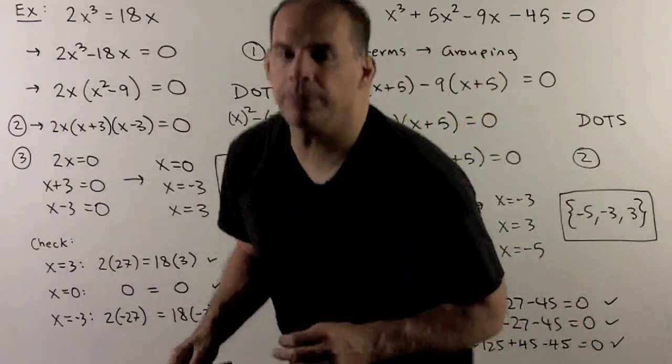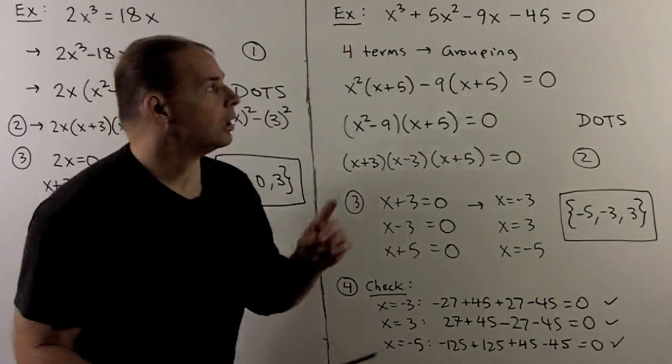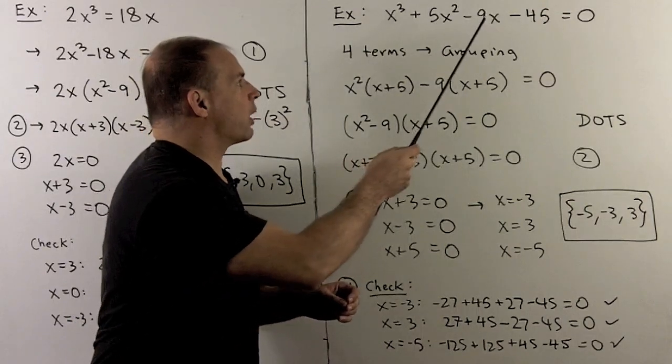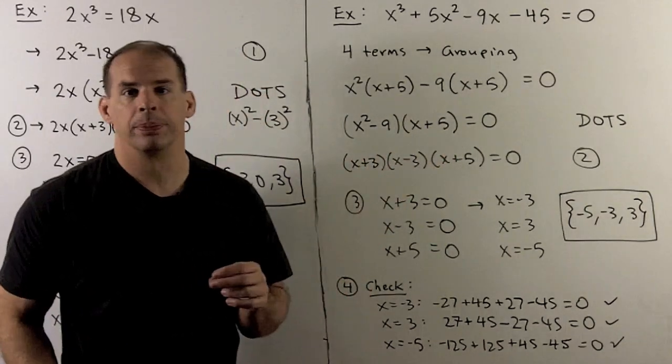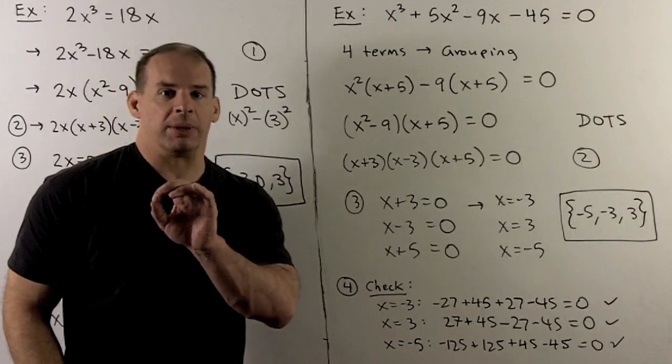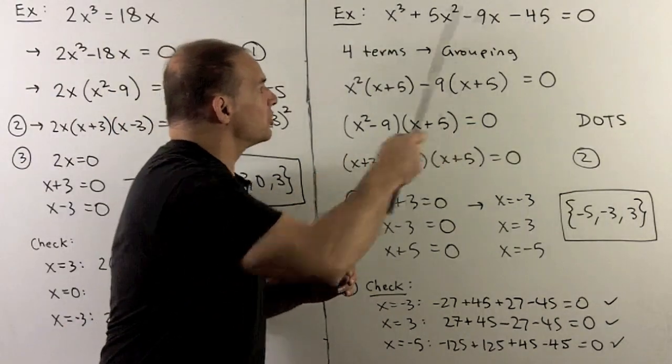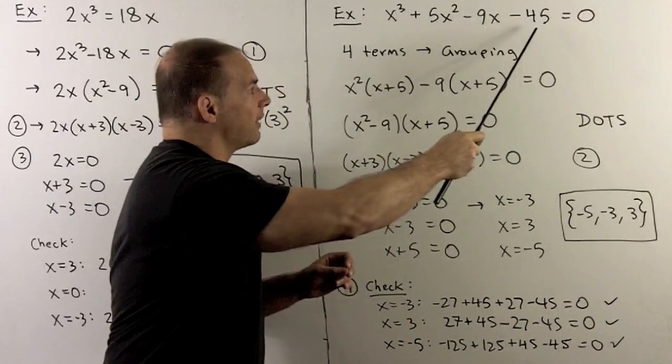Final example. Let's find all solutions to the equation x cubed plus 5x squared minus 9x minus 45 equals zero. Now, this looks complicated. If I look for a greatest common factor, there is none. It's just one. So there's nothing to pull out of the left-hand side.